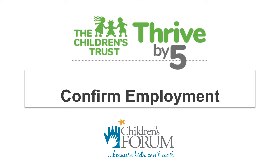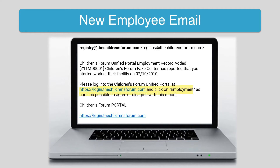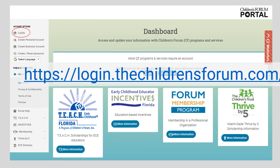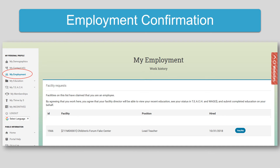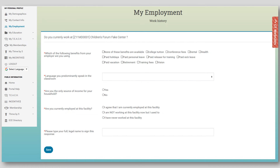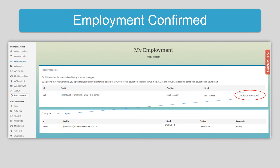Next, directors and required staff added to the roster need to confirm that they work for the child care program. This step only needs to be done one time for each employee added. Employees will receive an email prompting them to confirm their employment. If they do not already have a portal account, they will need to create one at this time. To confirm employment, directors and staff will log into their personal account. Once logged in, they will click on My Employment on the left-hand side and then click the Yes/No button to continue. Once all the questions are answered, click Save to confirm employment. Employment is now confirmed.